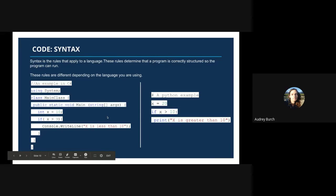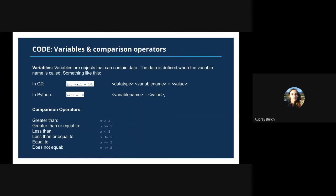You can find all of this information about a programming language by Google searching the language name and syntax. For example, 'Python syntax' would be a Google search you would use. Now we're going to talk about variables and how you can create a variable in Python as well as in C#. Variables contain data — the data is defined when the variable name is declared. In C#, the data type is first declared; 'int' is short for integer, which defines that the number stored in var1 doesn't have a decimal point.